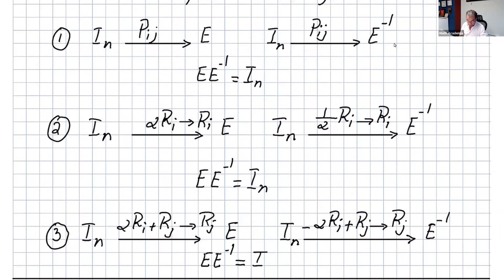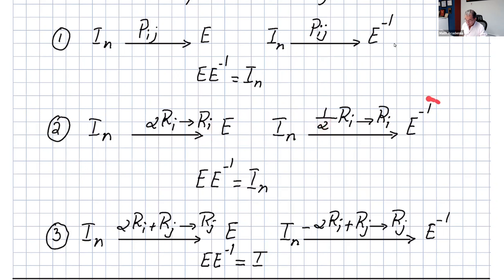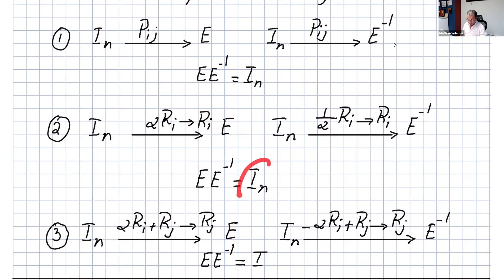For row operation two — multiplying a row by a constant α — you start with I_n and multiply a row by α to get an elementary matrix E. To find the inverse, take I_n and multiply that same row by 1/α. That gives E inverse, and multiplying E by E inverse yields the identity matrix.